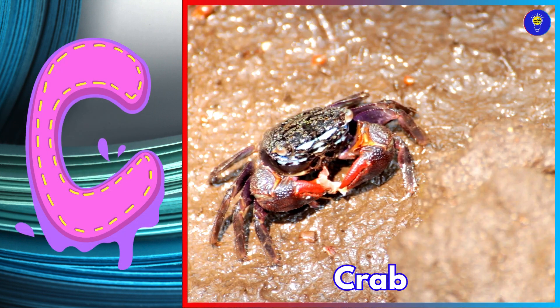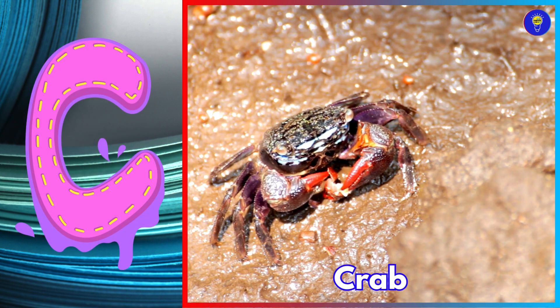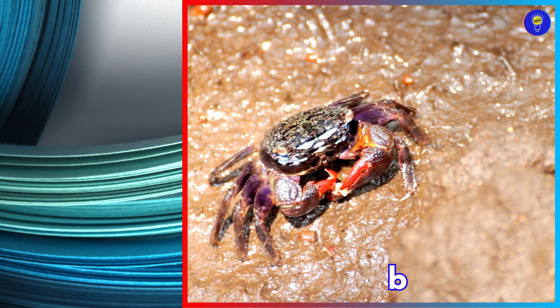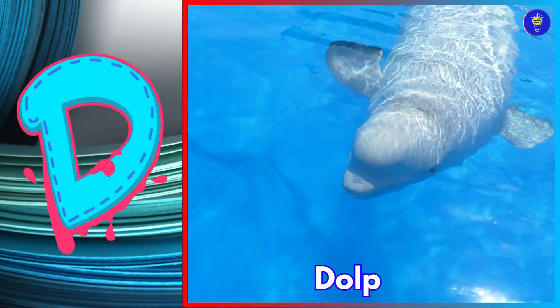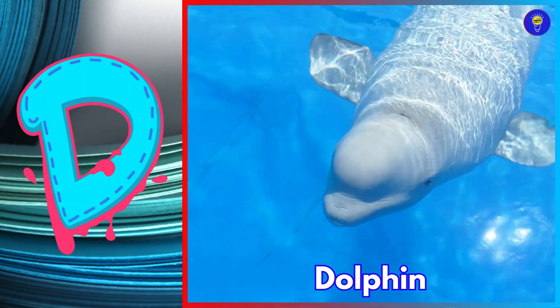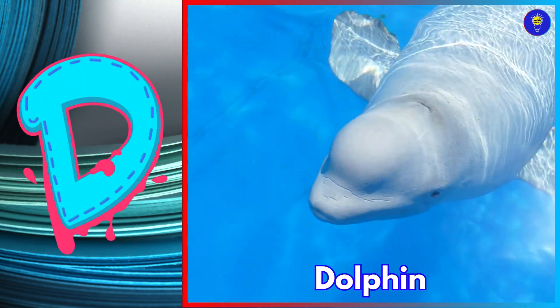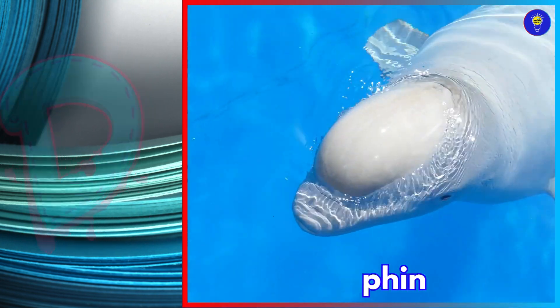C is for crab. Kuh, crab. D is for dolphin. Duh, dolphin.